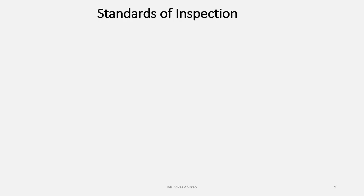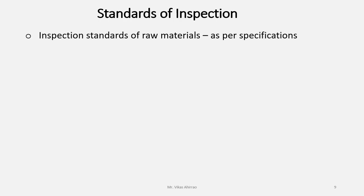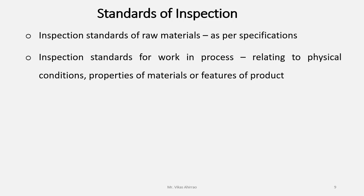The different standards of inspection include: inspection standards for raw materials, which are usually as per specifications. These specifications may be given by the manufacturer, or when non-standard parts need to be manufactured, the design department may provide these specifications. Inspection standards for work in process are usually related to the physical conditions, properties of materials, or features of the product.